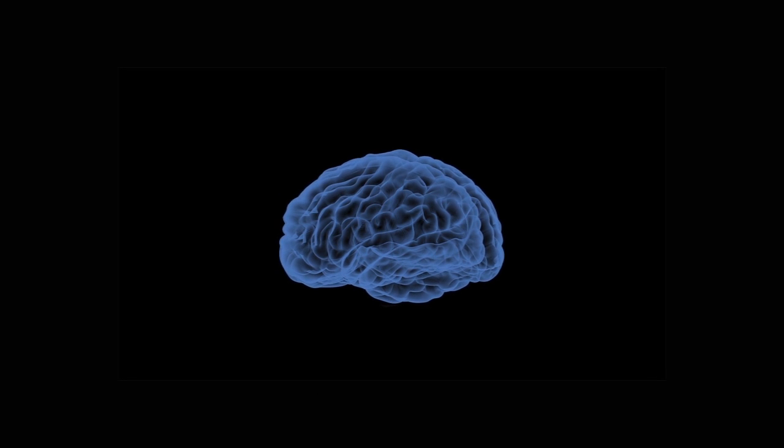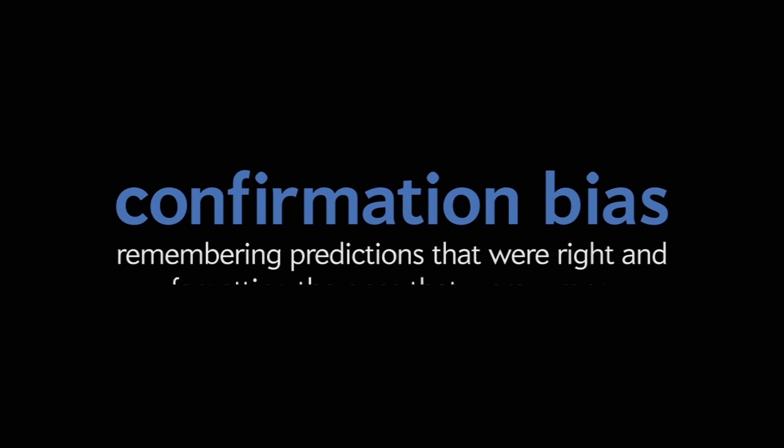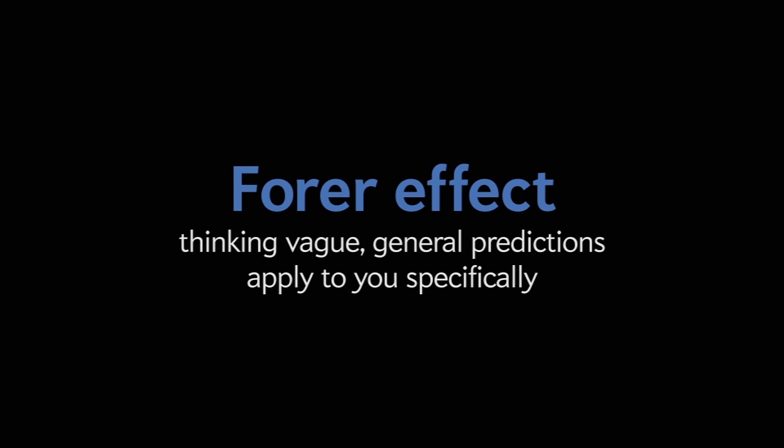Most people are clearly swayed by confirmation bias, that is, remembering predictions that were right and forgetting the ones that were wrong. And the Forer effect, or thinking vague general predictions apply to you specifically.